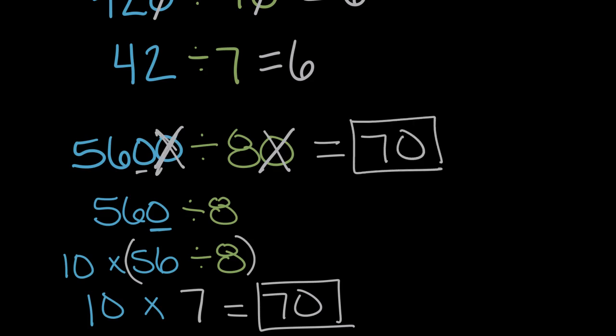Because when we cancel zeros and divide, we still get the same solution. But remember, we have to cancel the same amount of zeros in each number. Here we couldn't cancel both zeros. If we cancel one zero in the dividend, we can cancel one zero in the divisor.